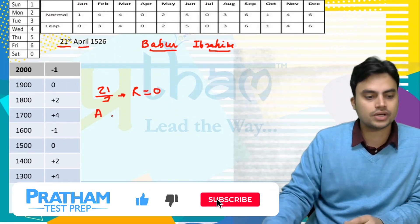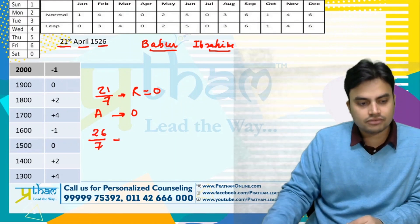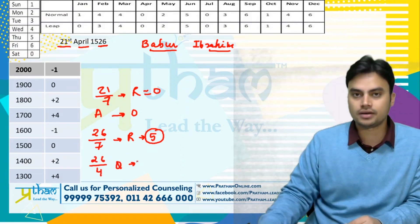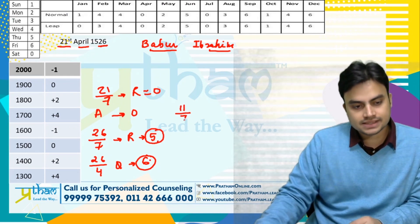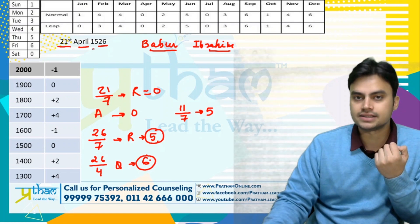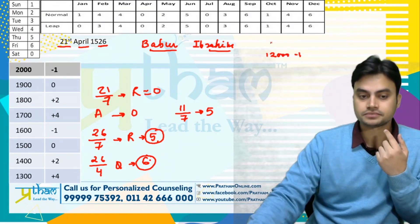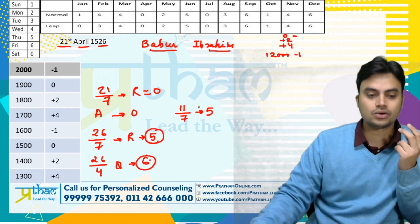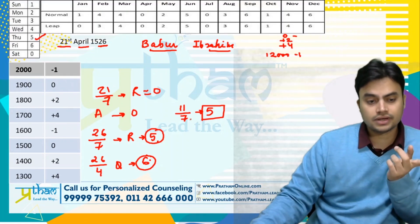April hai — April ka code koi fark nahi, April ka code hoga hamesha 0. 26 chal raha hai. 26 divided by 7, remainder will be 5. Aur 26 ko 4 se divide karke quotient lenge — quotient will be 6, kyunki 6 times 4 is 24. 0 plus 0 plus 5 plus 6 is 11. 11 divided by 7 — correction: 4 will be the remainder. 1500 ka series hai — benchmark 1200 hai, minus 1 phir plus 4 phir plus 2 phir zero. So 1500 ke liye zero add karna hai. Toh 4 remains, and 4 is Wednesday.